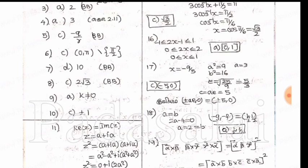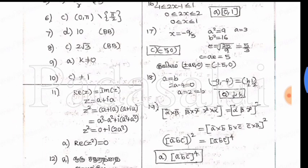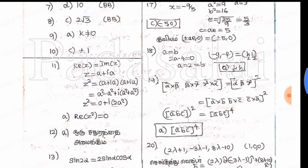17th one is C, minus 5,0. 18th one is A, 1 by 2, 1 by 2. 19th one is a square equal to a vector, b vector, c vector, 7 power 4.